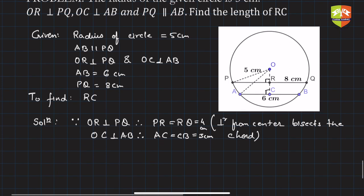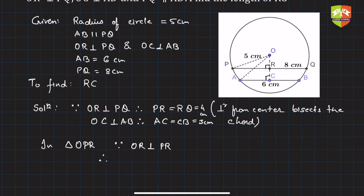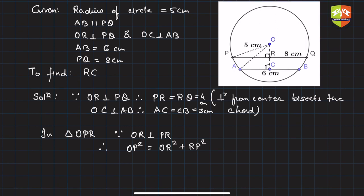Now in triangle ORP, since OR is perpendicular to PR, therefore OP² equals OR² plus RP². So we can find out OR² from here. It is nothing but OP² minus RP².